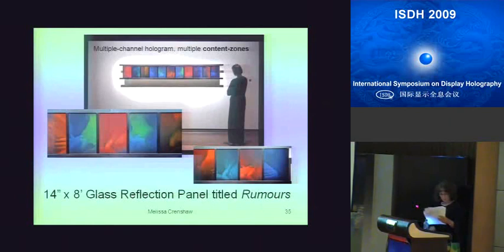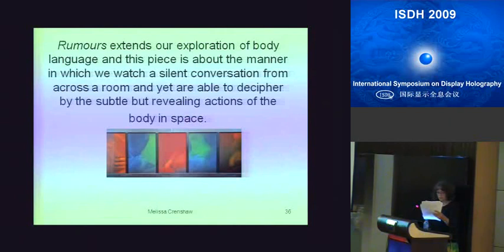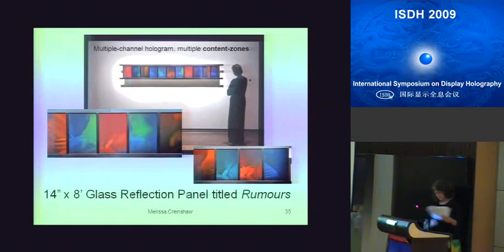The content zone technique was also used for the multiple exposure panels Untitled and Rumors. These panels were made up of several images. The original H1 masters were two-channel and transferred as double exposures into the final holograms. We offset the H1s to utilize the aperture boundaries and content zone projected images to emphasize the meaning of the work. Rumors extends our exploration of body language — this piece is about the manner in which we watch a silent conversation from across a room and yet are able to decipher the subtle but revealing actions of the body in space. This panel is about eight feet long, made up of about 44 different images, and as you walk by they move and shift and turn.